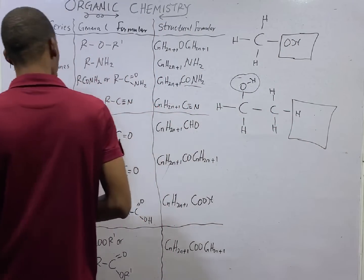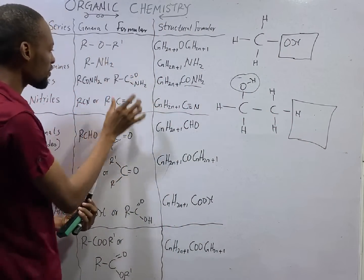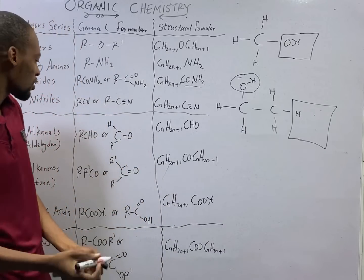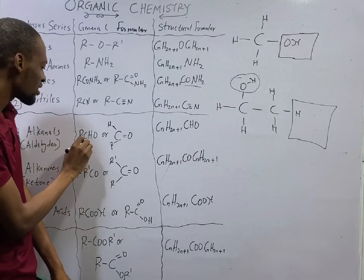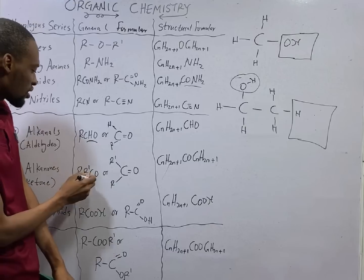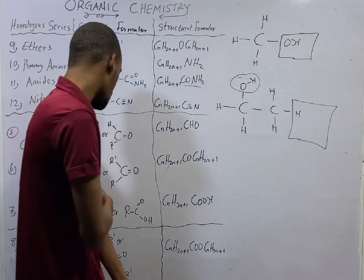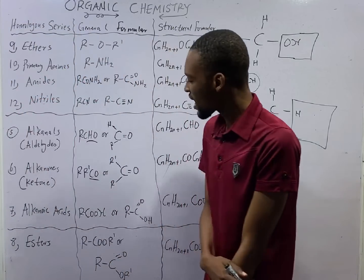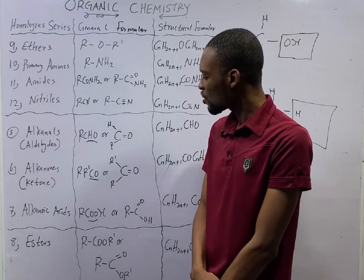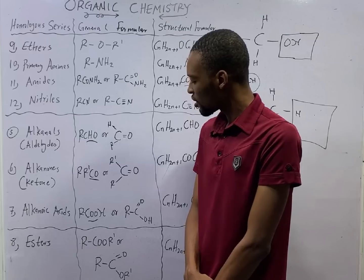This is the homologous series. Here is the general formula. And from the general formula, you will be able to pick out the functional group. For example, in aldehydes, CHO is the functional group. For ketones, COO is the functional group. For carboxylic acids, COOH is the functional group.